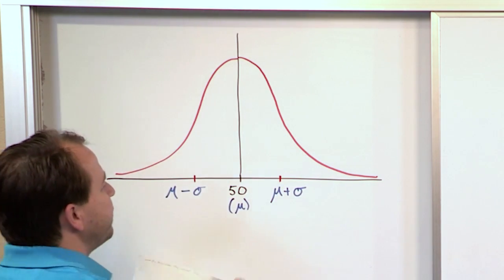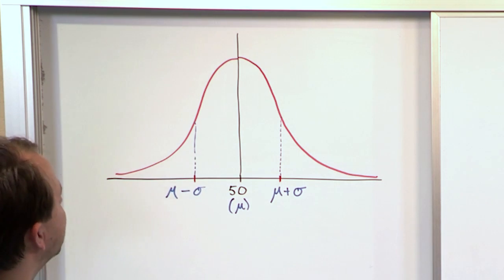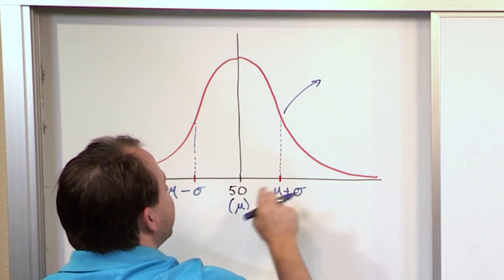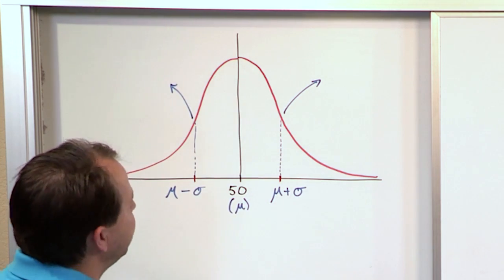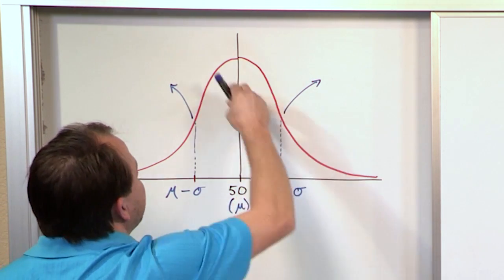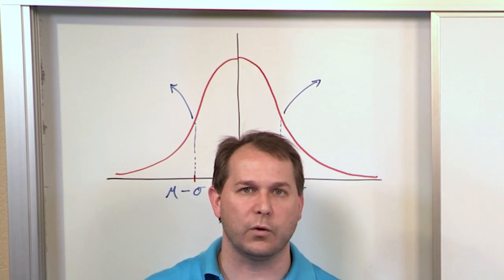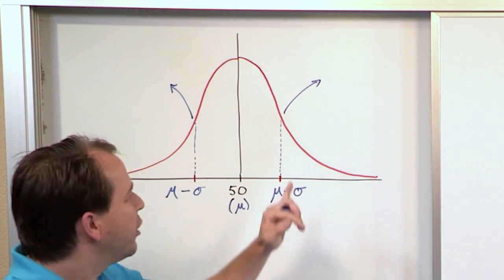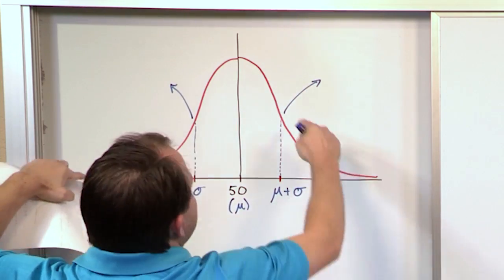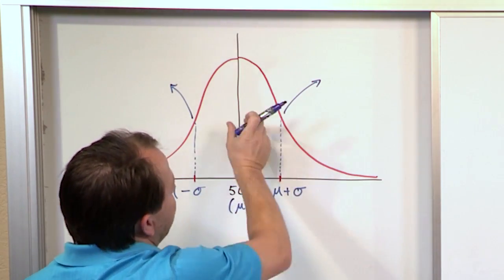On the graph of the normal distribution, if you draw dotted lines up, notice the normal distribution starts to bend the other direction right at the first standard deviation on each side. That point is called an inflection point — inflection means to change direction. So when the curve changes direction, that's generally where the first standard deviation is. If you have a broad curve, the inflection point is farther out and the standard deviation is larger. A steep peak means a tighter standard deviation.